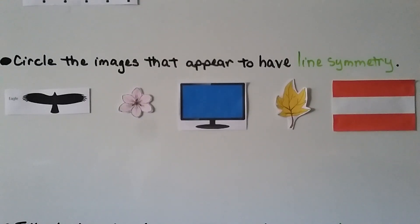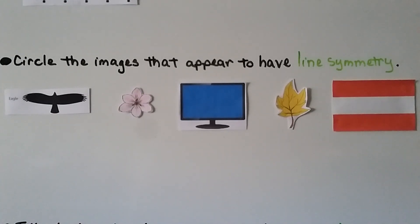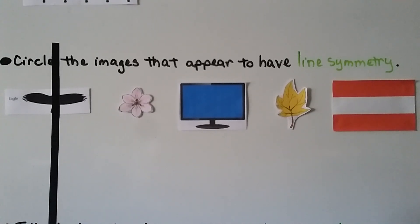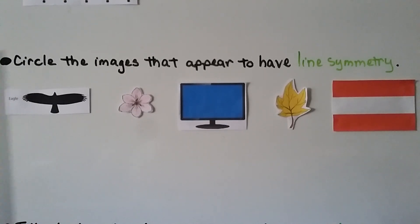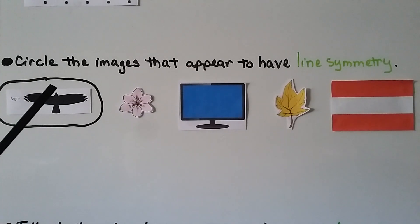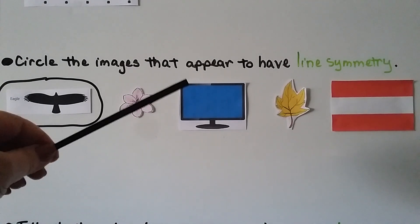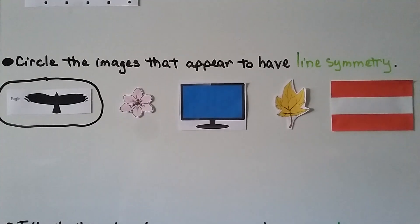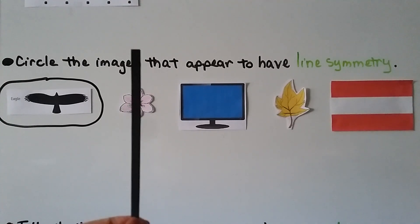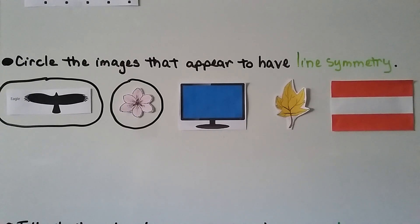We need to circle images that appear to have line symmetry. A shadow of an eagle: drawing a vertical line down the center would create symmetry — it appears to have vertical line symmetry. The tail is too big compared to the head, so it wouldn't have horizontal line symmetry. A flower: it clearly has vertical line symmetry. We could fold or trace it to check for additional lines of symmetry.